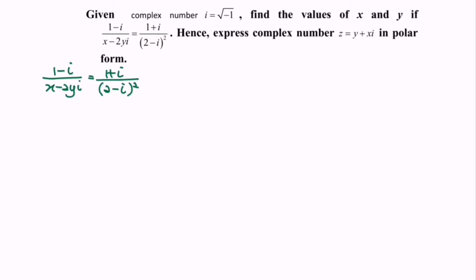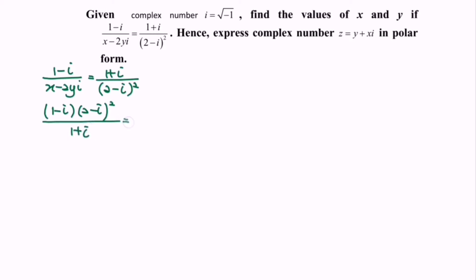So where we will have 1 minus i multiply with 2 minus i bracket squared over 1 plus i, equals to x minus 2yi.